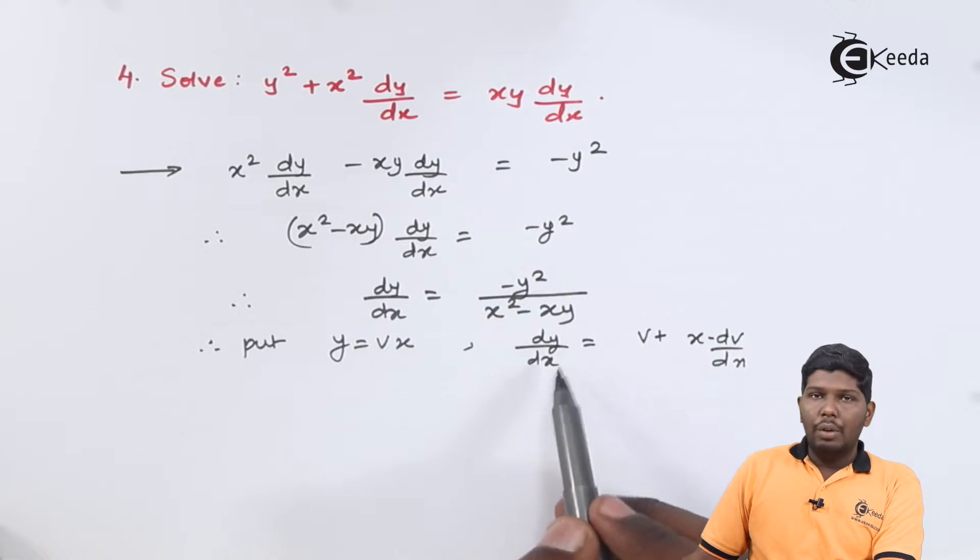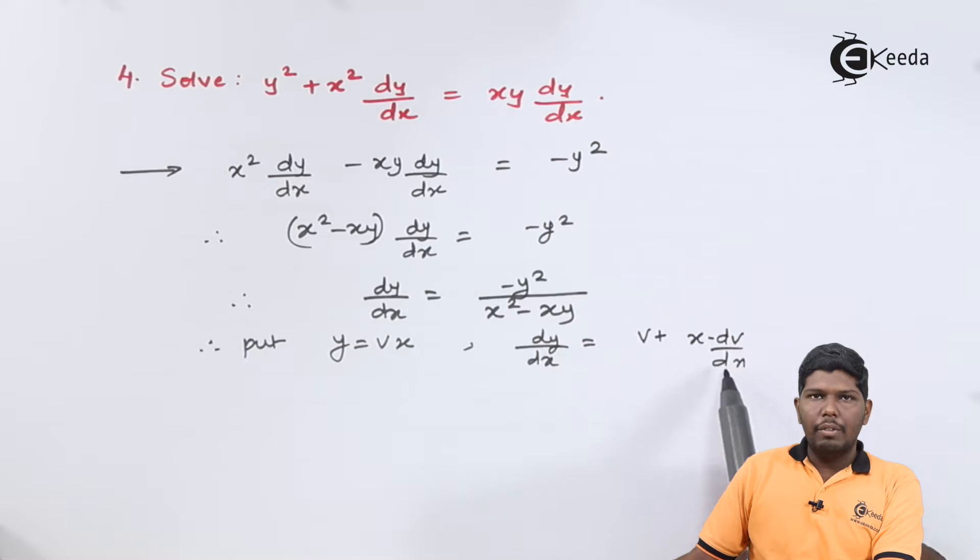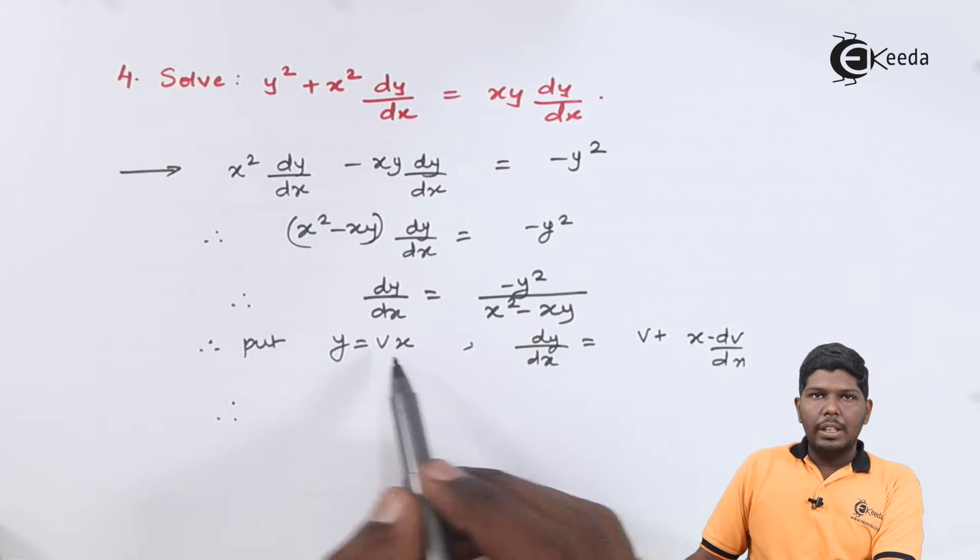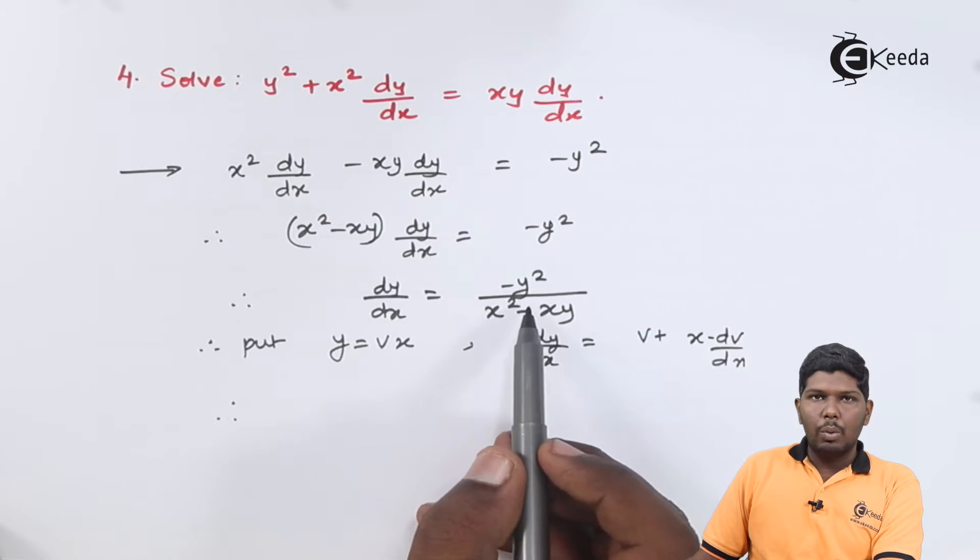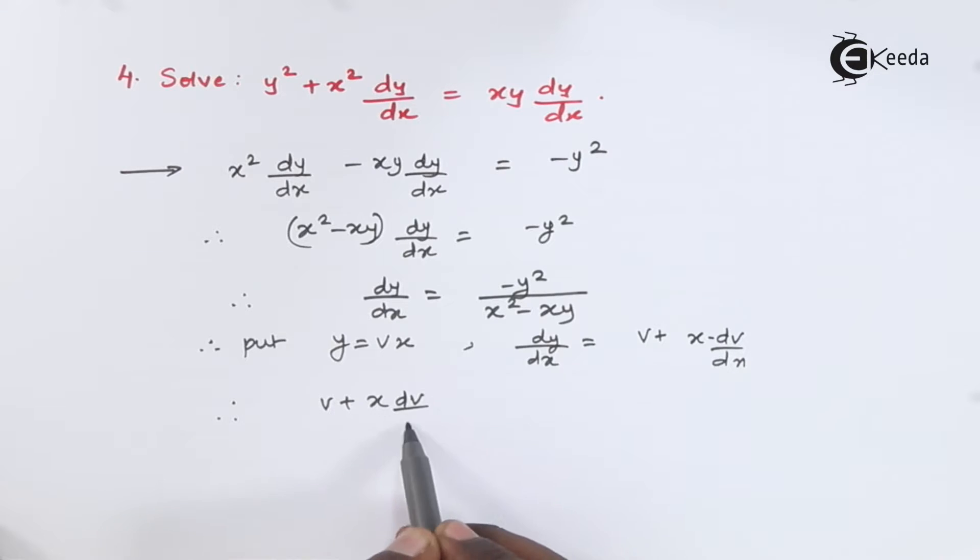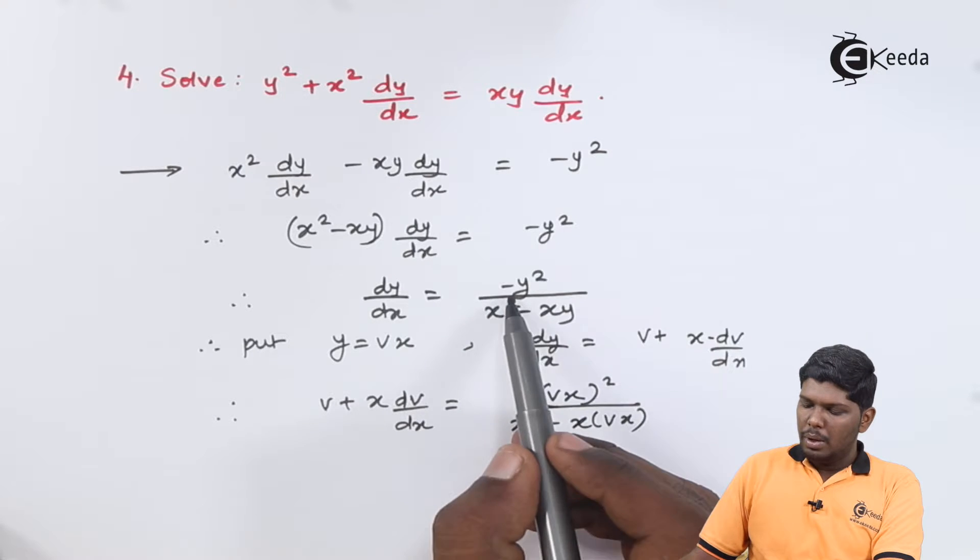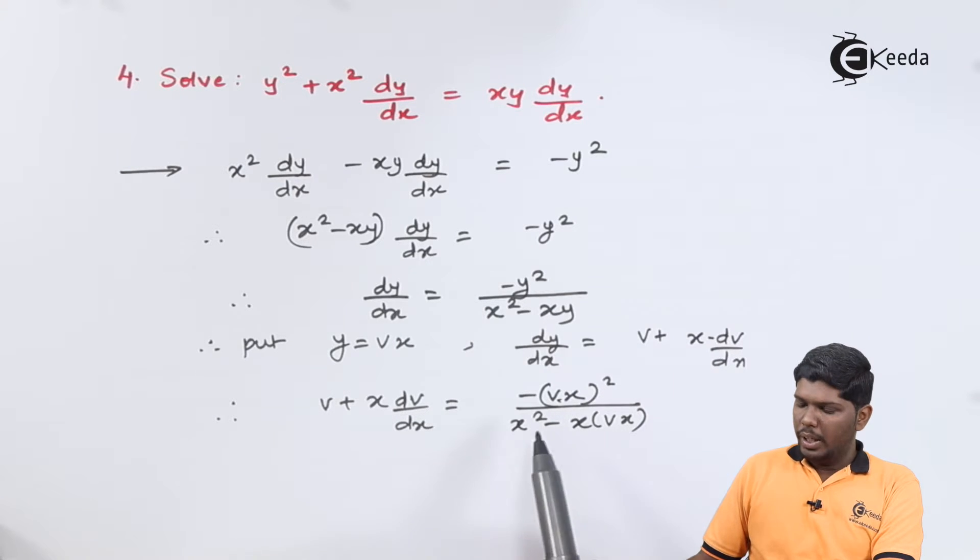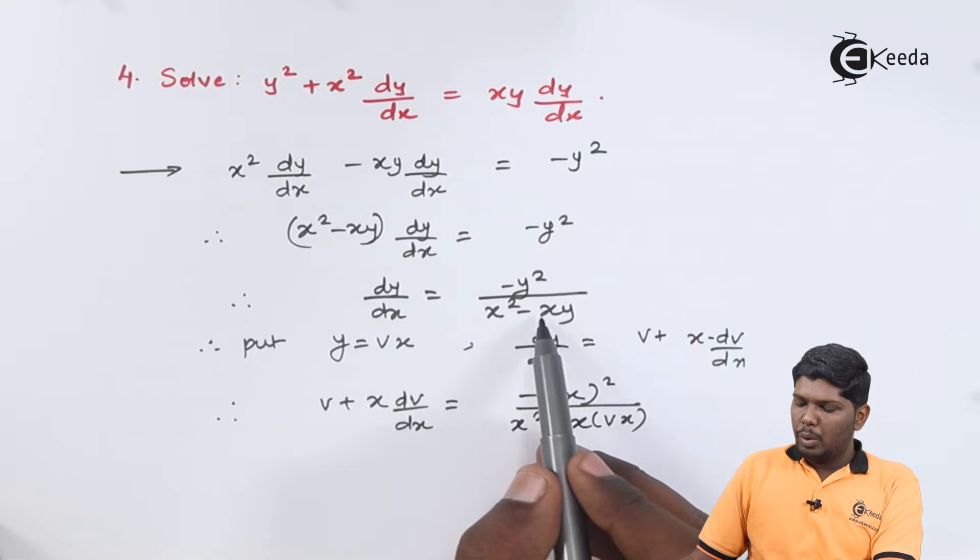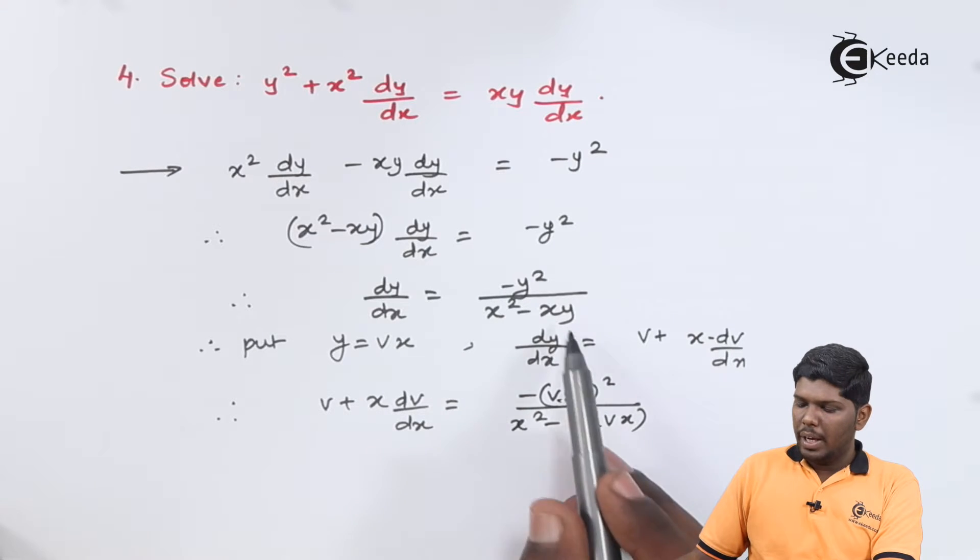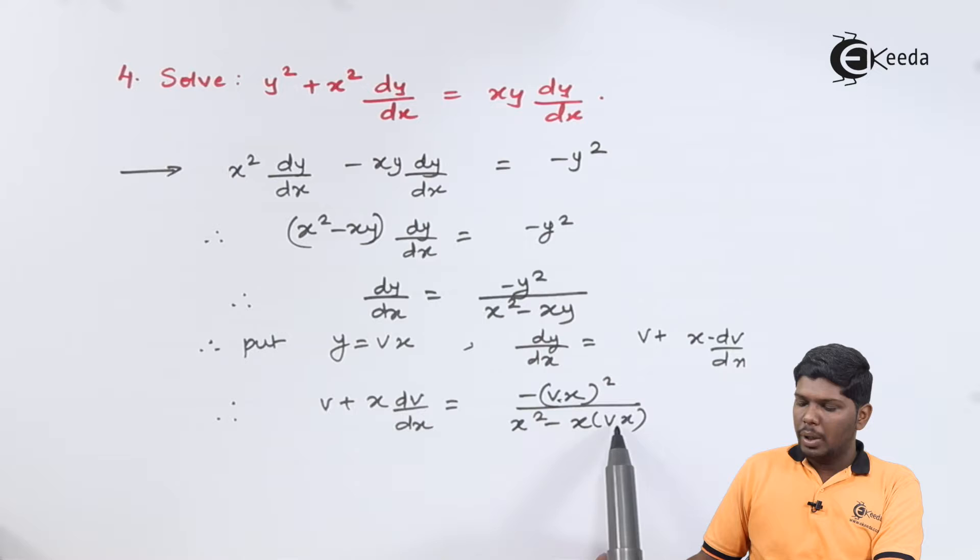The value of dy by dx will be v plus x dv by dx. After substituting these two values in the given equation, we have v plus x dv by dx is equal to minus vx the whole squared divided by x squared minus x into the value of y, which will be vx. Now here also you can take x squared common from the denominator that can be eliminated from the numerator.